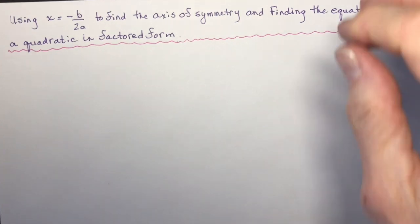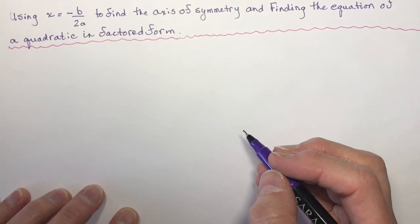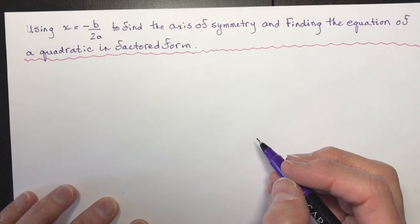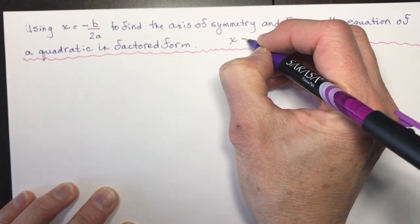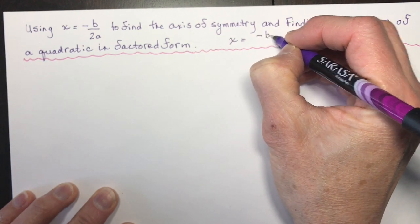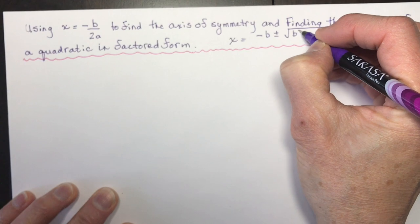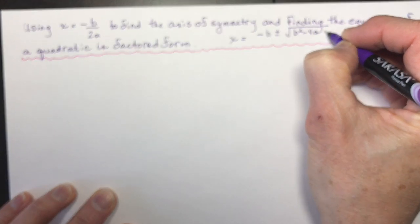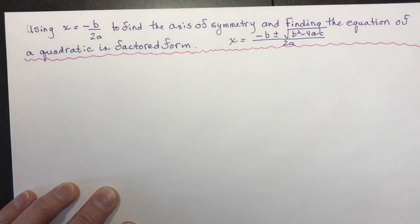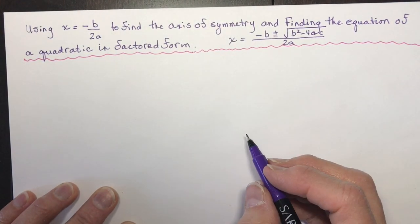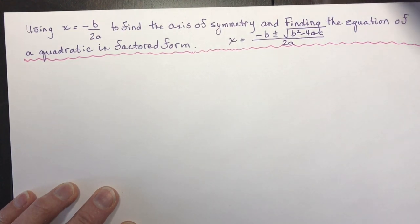Let's take a quick review of the equation for the quadratic formula, which you probably have all memorized by now. We had x equals negative b plus or minus the square root of b squared minus 4ac, the whole thing over 2a. Don't forget the whole thing part. We learned in the last lesson about the discriminant.